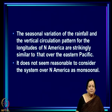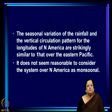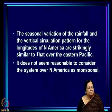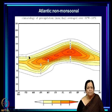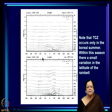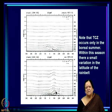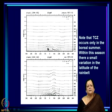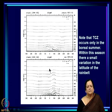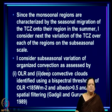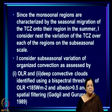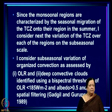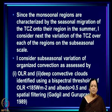The Atlantic is another non-monsoonal region—there again we get a TCG kind of circulation only in one season, with none in January. Since monsoonal regions are characterized by the seasonal migration of TCGs onto their region in the summer, we will next consider the variation of the TCG over each of the regions on the sub-seasonal scale.